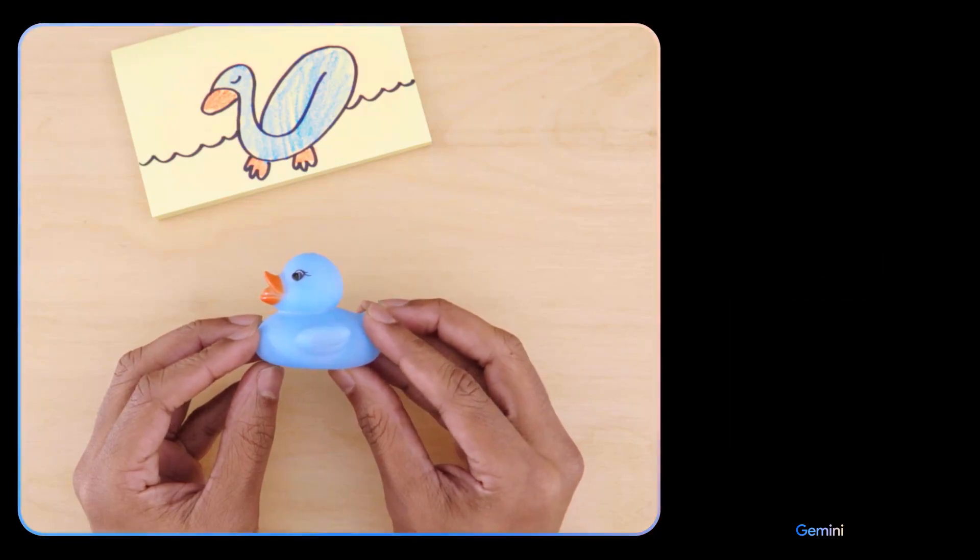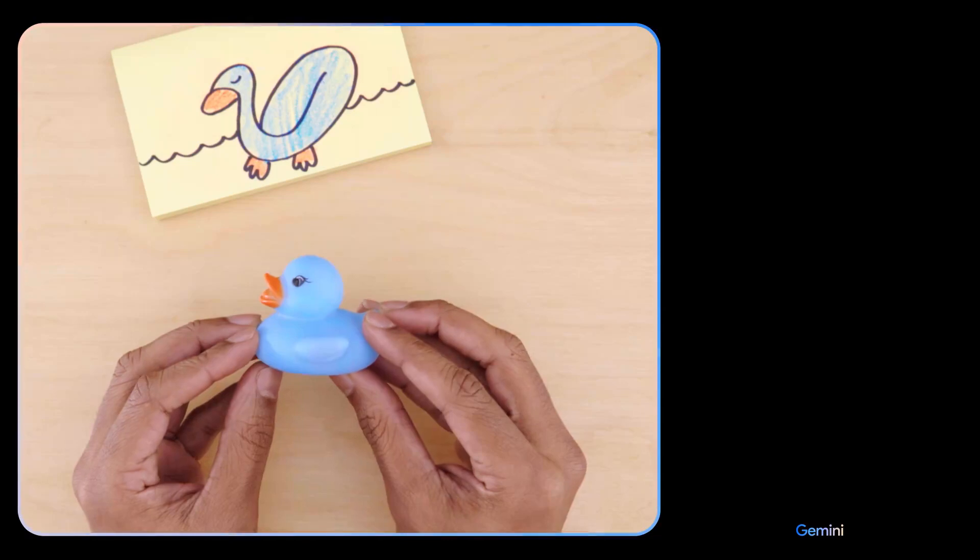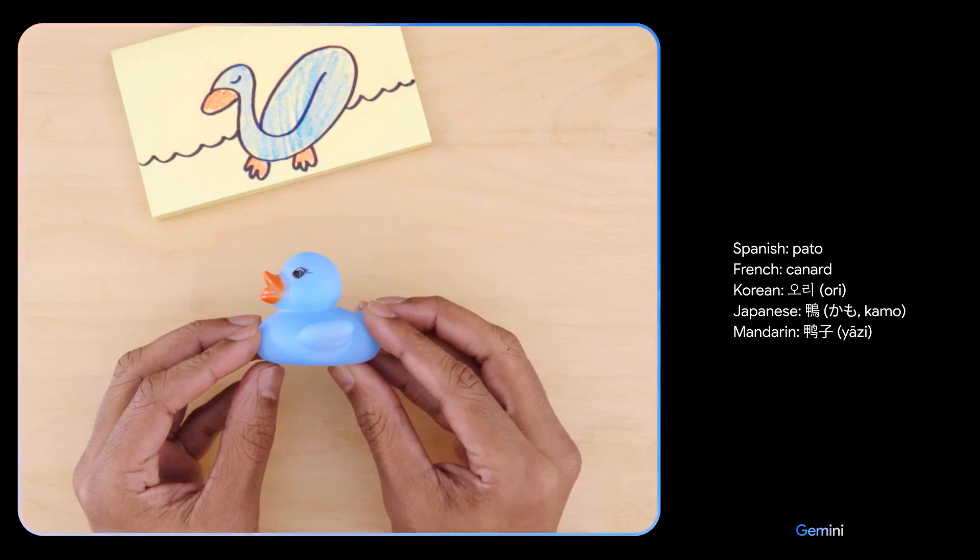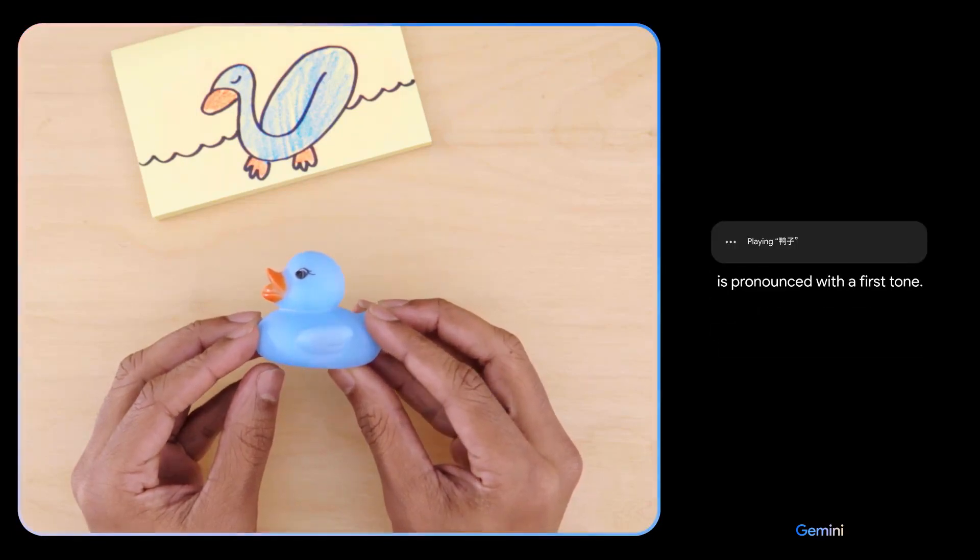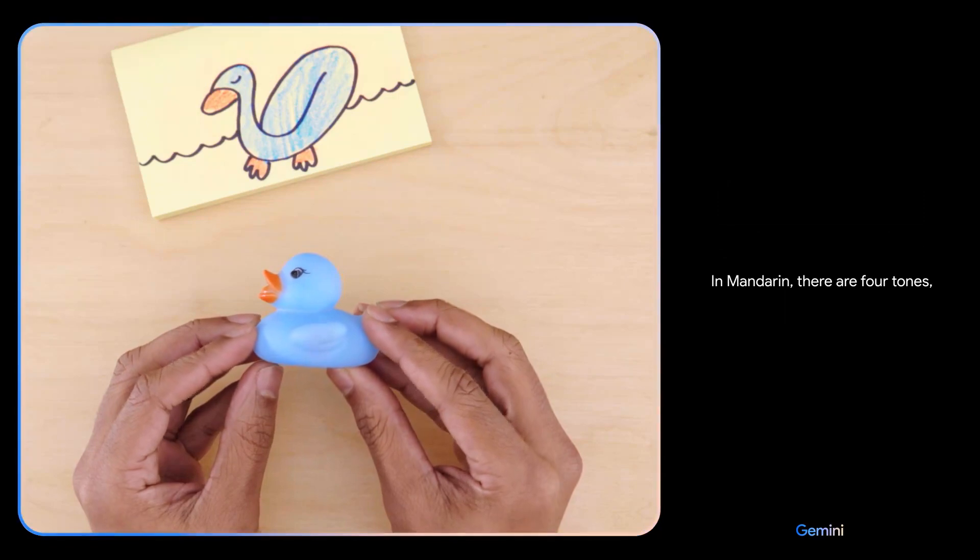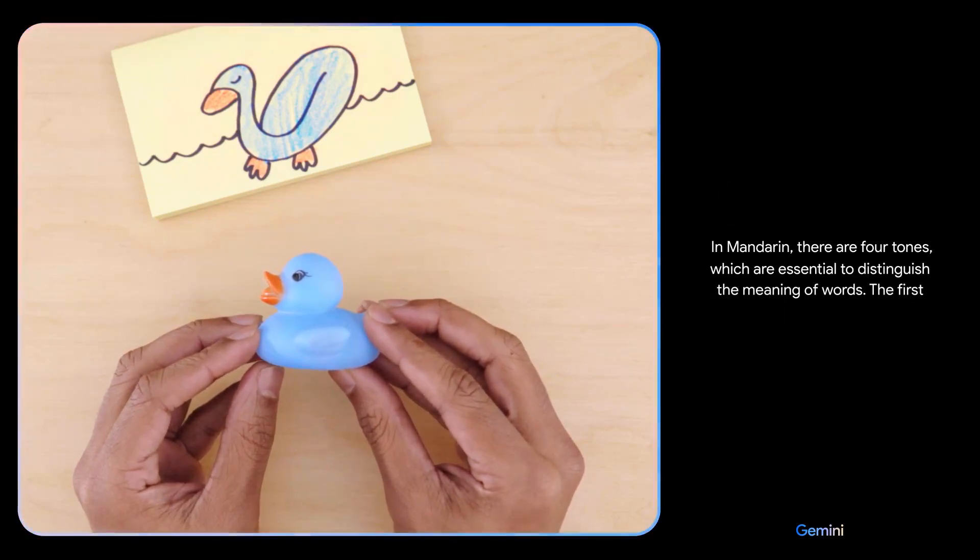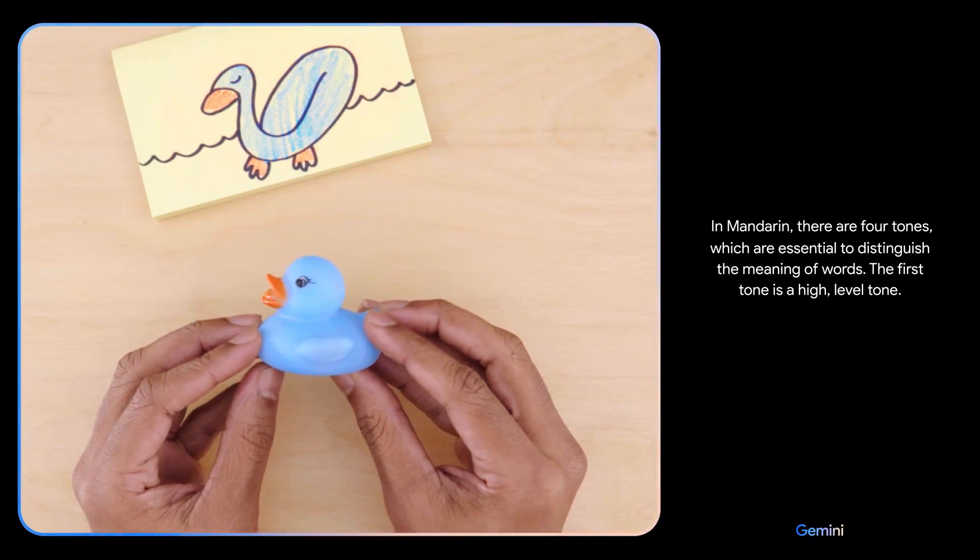Can you teach me how to say this in a different language? And give me a few options. Can you explain how to pronounce the Mandarin one? Is it Ya-tsu? Ya-tsu is pronounced with a first tone. In Mandarin, there are four tones, which are essential to distinguish the meaning of words. The first tone is a high, level tone. Oh, okay.